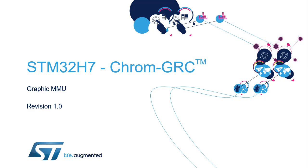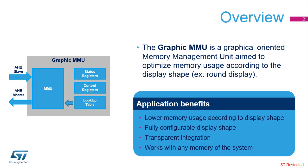Welcome to this presentation of the STM32 Chrome GRC. This chapter presents the features of the memory management unit used in graphical-oriented applications. The Chrome GRC is a graphic-oriented memory management unit to optimize memory usage according to the display shape. It lowers memory usage by storing only the visible pixels in memory, is fully configurable according to the display shape, and is totally transparent in the system.